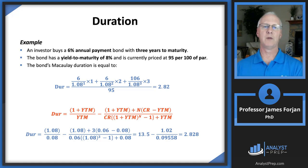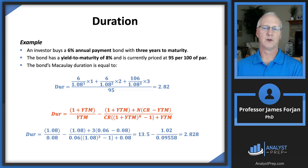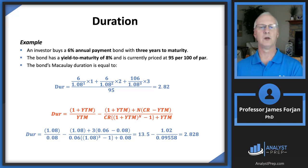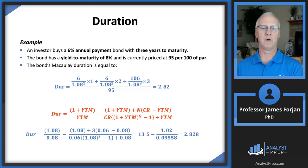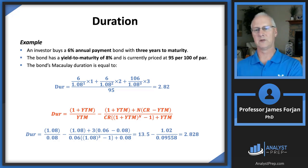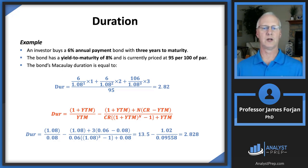On an exam you might need to compute duration this way, and for short-term bonds it's not too cumbersome. However, there's a shortcut formula shown in red that gives a good estimate. Using that red formula, you get 2.828 instead of 2.82 — either approach works for computing the duration of a bond.